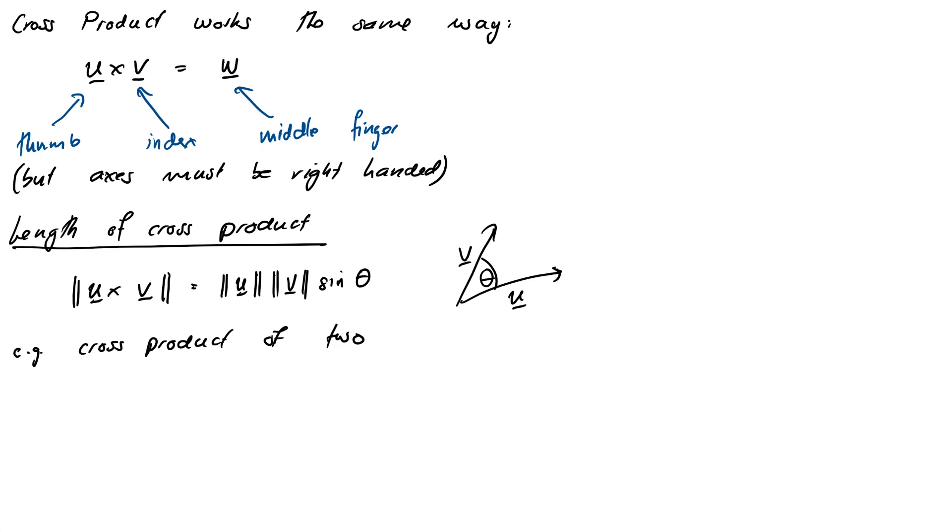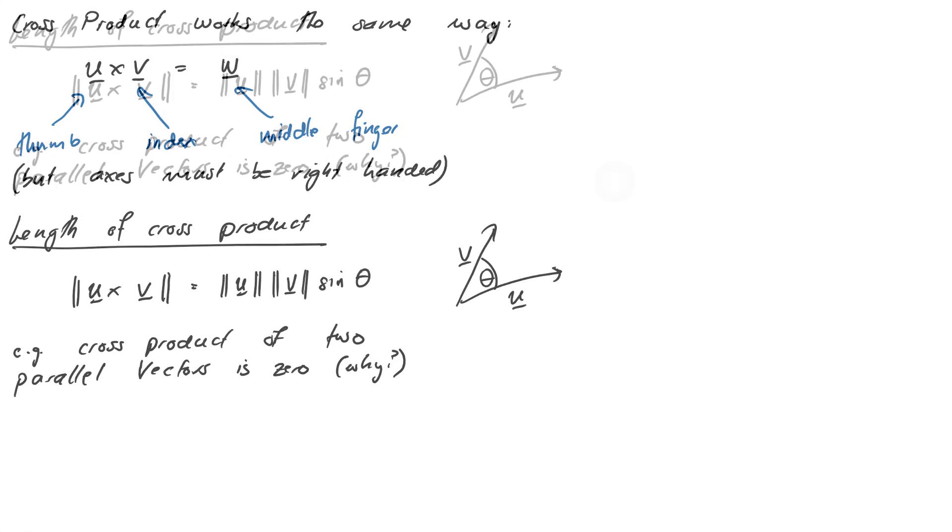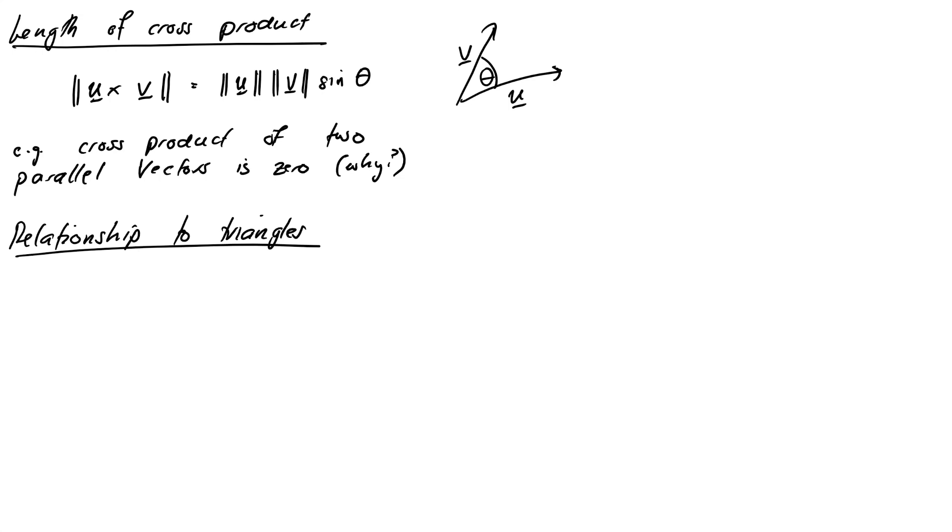So this tells us a couple of things right off. For example, if two vectors are parallel, the angle between them will be zero, and that means sine θ will be zero and their cross product will be zero. Okay, so the nice thing about this formula is it has a very tidy relationship with triangles. So you might remember there's a formula that gives you the area of a triangle if you know two sides and the angle between the two sides. And that is the area of a triangle is one half times the length of one side times the length of the other side times sine θ. So you might have this drummed into your brain as half AB sine C or something.